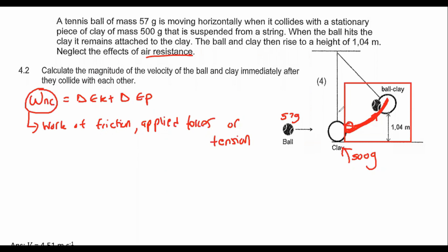There are no non-conservative forces in this section, so for your WNC, you can say zero. Then you say delta EK, which will be a half M VF squared, so it's your final velocity, minus your initial velocity, plus your potential energy final minus your potential energy initial. I'm only talking about in this red box, so this will be your initial condition as the clay and the ball hit each other, and this will be the final condition.